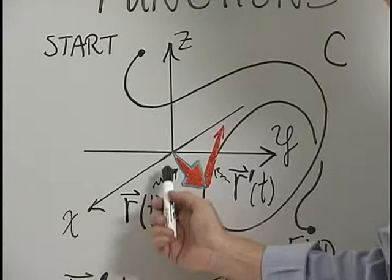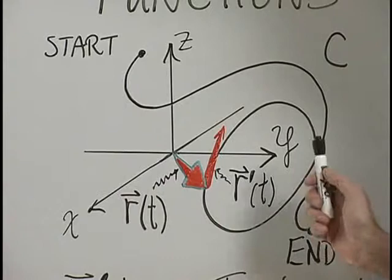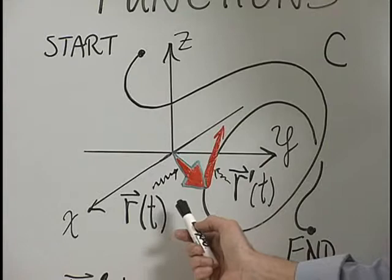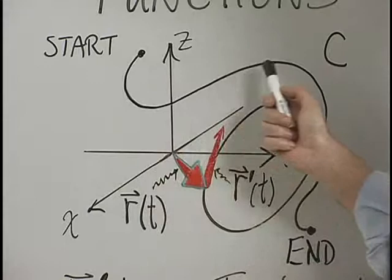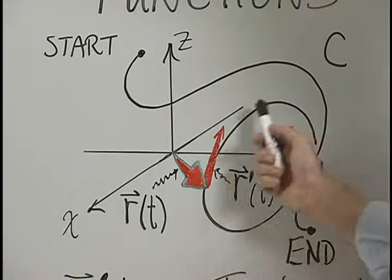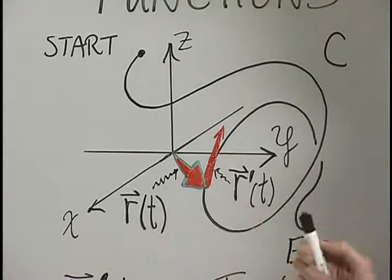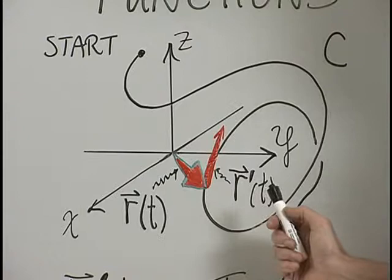We fix the tail of the vector r of t at the origin, and so as t varies, the vector changes, but the tail won't move. That way, the tip of the vector specifies a position in space. We're going to think of r of t as a position vector. If the tip of the vector starts here, as t changes, it traces out some curve in space. If I think of t as time, then we're actually getting a motion in space — it could speed up for parts of the curve, then slow down, and so forth. The idea of differentiating the curve is to take the rate of change of that function.